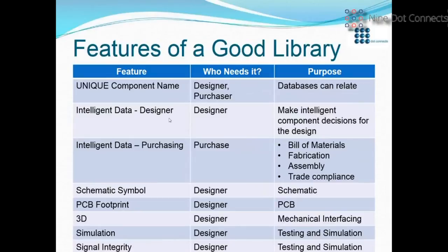There are two types of intelligent data. There's the designer data — characteristic data — so you can make intelligent decisions when finding a part in the library. And there's the purchasing intelligent data, which is primarily to get the product out the door: your fabrication, your assembly, and most importantly your bill of materials. There also needs to be a unique component name.